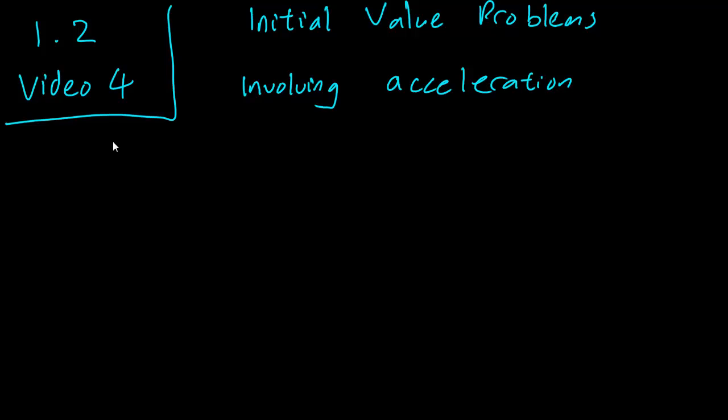Acceleration is the derivative of velocity. So you often write a equals v prime, and as we discussed in the last video, velocity is the derivative of position. So whenever a problem asks about acceleration, you can know that this is simply a problem involving the second derivative of our position function.